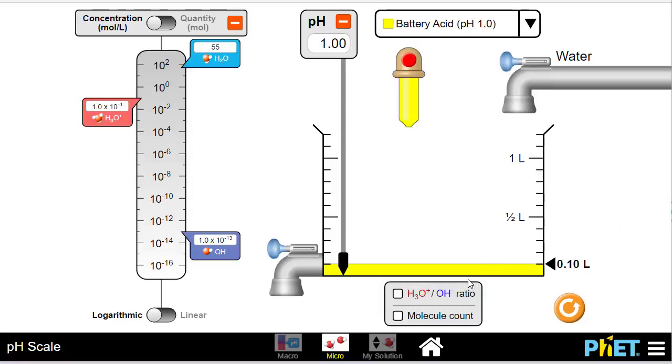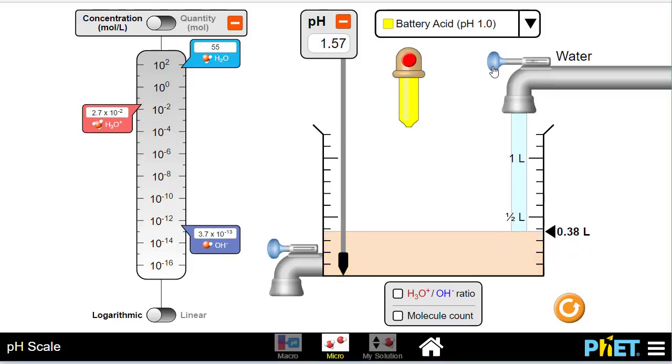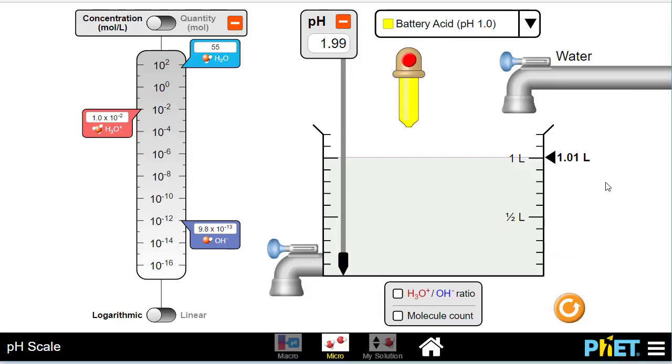Now we're going to dilute this 10 times. This is 0.1 liters, and we're going to dilute it to 1 liter and see what happens. Oh, I just overshot a little bit, but that's okay.